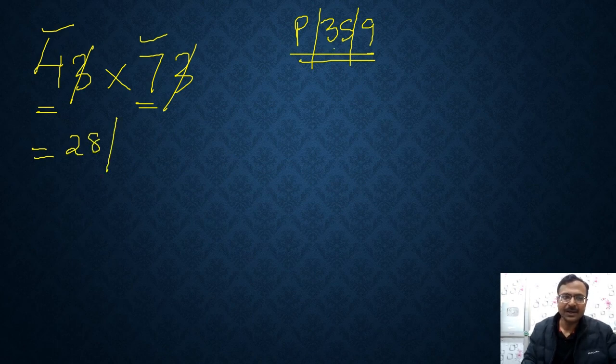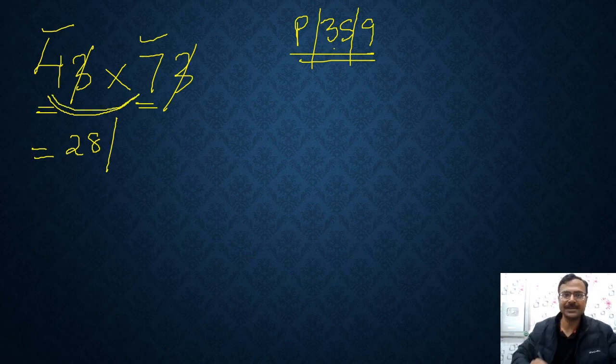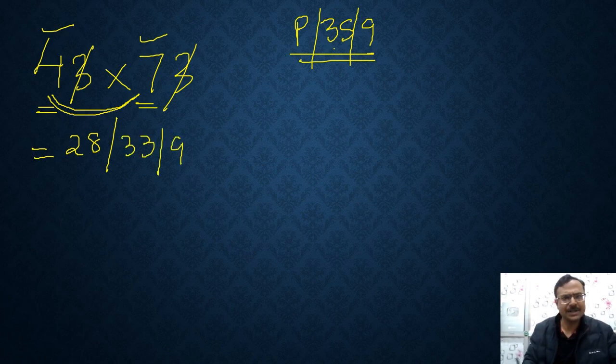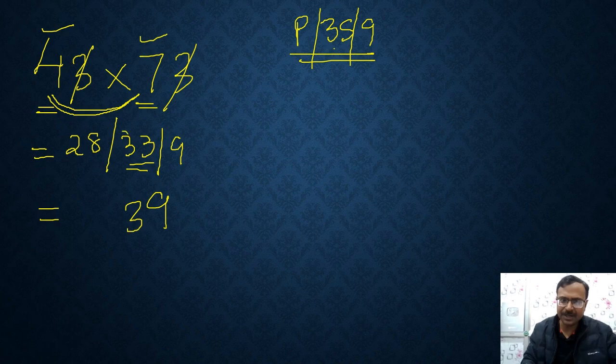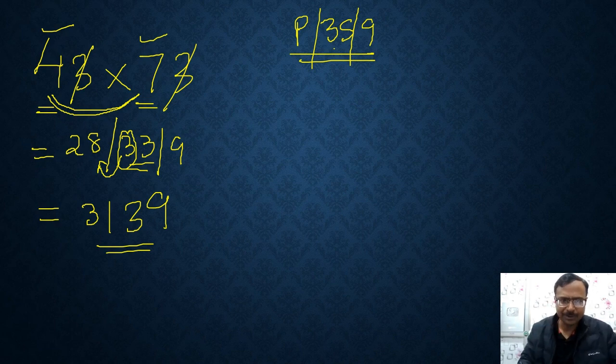3S means, add means sum, sum of 4 and 7 is 11 and 3 times that, 3 times the sum. So that is 33 and 9 obviously is 9 itself. Here's your answer. 9. 33 means 3 retained and the 3 carried over. So 28 plus 3 is 31. Pick up your calculators. Come on and check. You will be surprised.